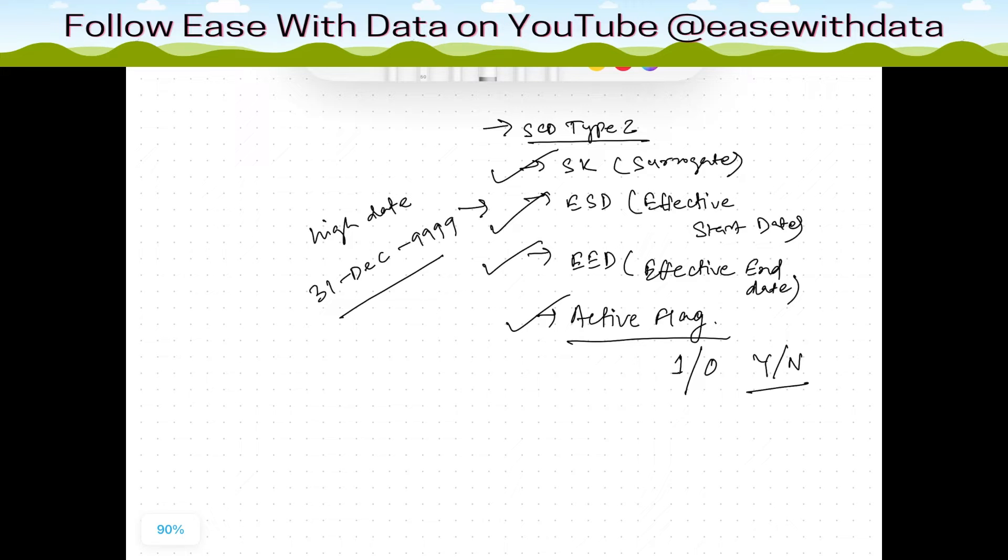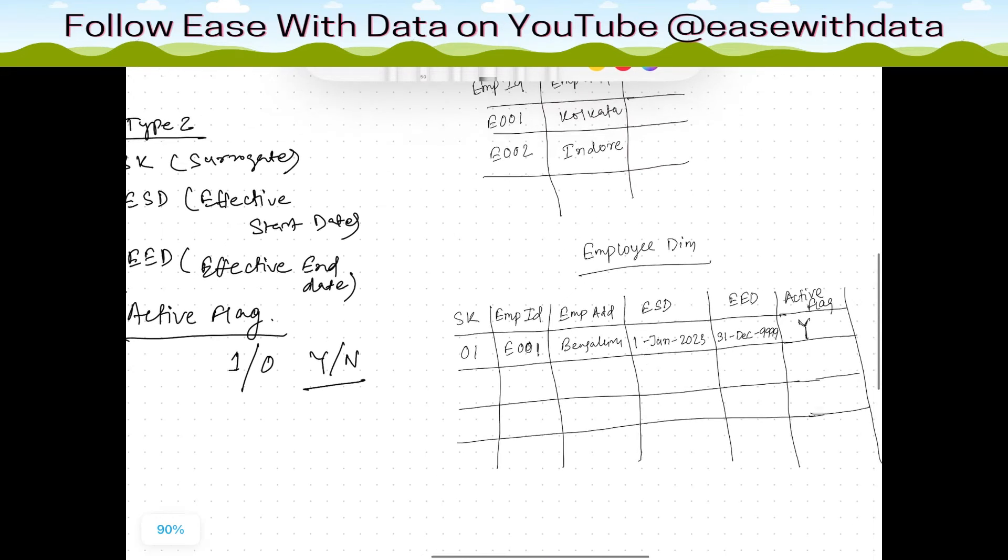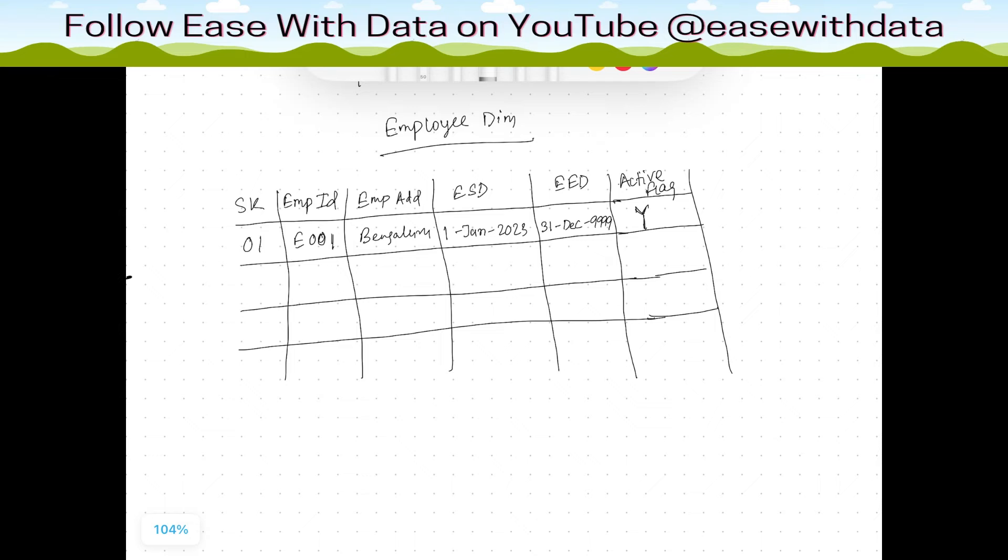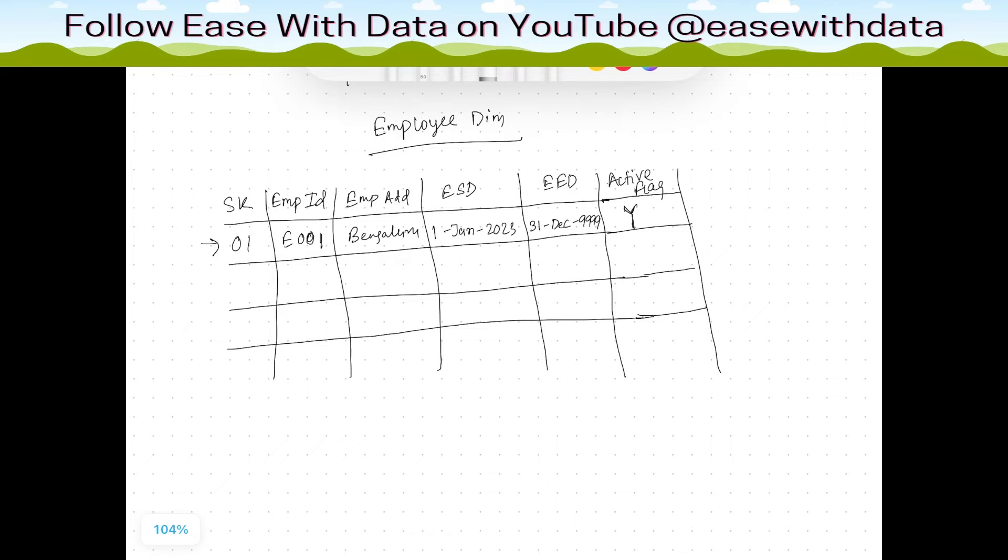Now let's jump into an example to understand it quickly. Consider this is the employee dimension and we have one record already inserted into this which has a surrogate key of 01. The employee id is E001. The employee address, the current record, is Bangalore, and the effective start date is 1st January 2023. Since this is a current record, we are marking effective end date as 31st December 9999 and we have marked this active flag as Y.